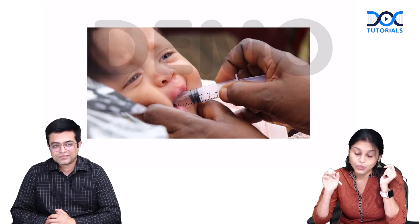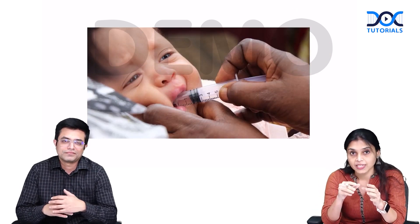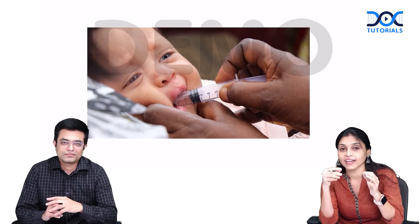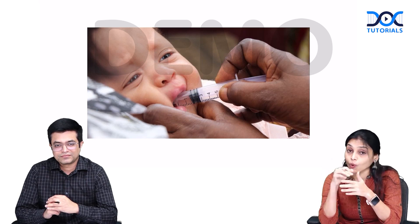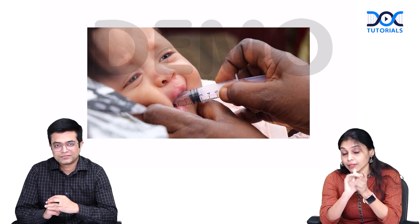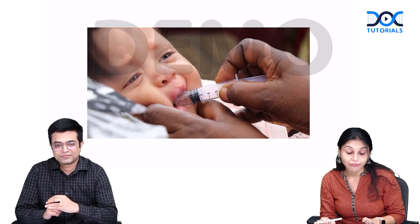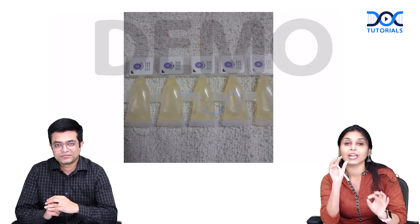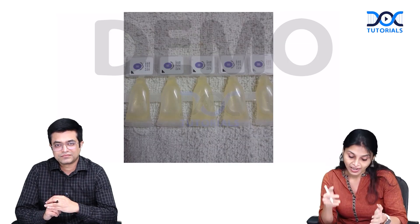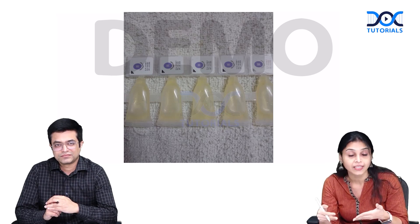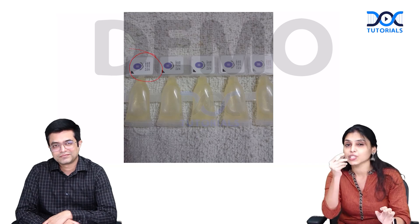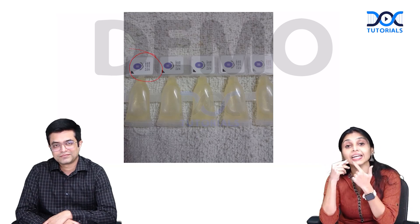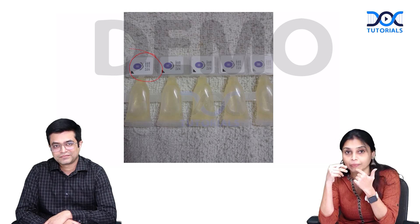Until recently, the vaccine was drawn into a syringe and 5 drops were instilled into the right cheek of the baby. Now, pre-packed small packets of rotavirus vaccine are available. You simply flip it open and squeeze 5 drops inside the right cheek of the baby.